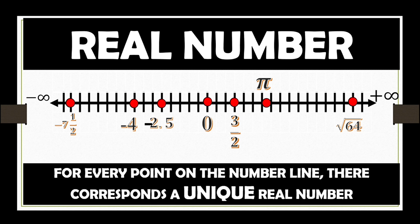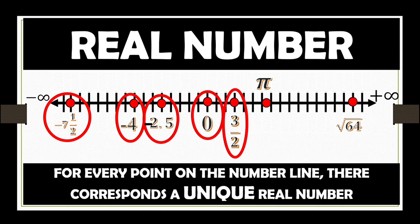And, for every point on the number line, there corresponds a unique real number. So, here in this number line, we have a point that represents negative 7 and one-half, a point that represents negative 4, negative 2.5, 0, 3 halves, pi, and square root of 64. This means that there is a unique real number in every point on our number line.